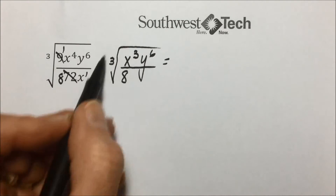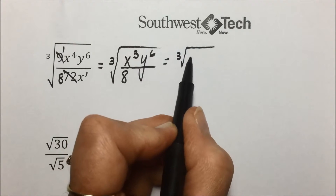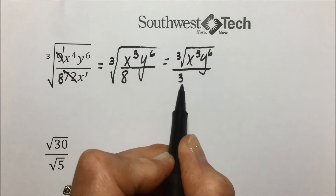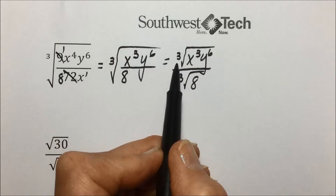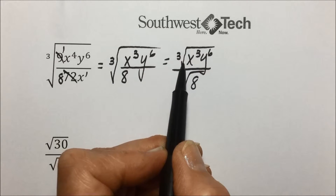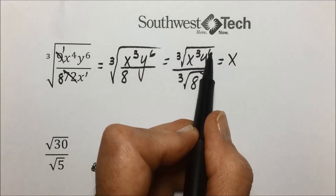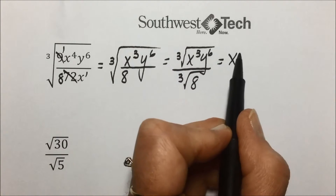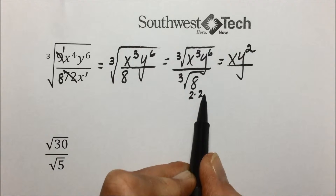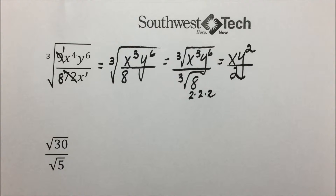Now separating these, we take the cube root of the numerator — x to the 3rd and y to the 6th — and in the denominator the cube root of 8. Taking exponential powers and dividing by the index: x to the 3/3 is x to the 1st power; y to the 6/3 is y to the 2nd power; and 8 is a perfect cube since 2×2×2=8, so the cube root of 8 is 2. Our final answer is xy² over 2.